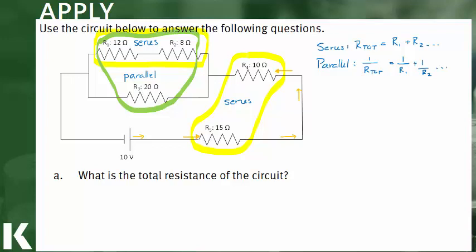So let's start with resistors 1 and 2. Those are in series. So we'll make one larger resistor. We'll call it R12. And we'll just use our formula for series. So we have the resistance of R1 plus the resistance of R2. And that would give us a total resistance of 20 ohms. So we can say R12 is 20 ohms.